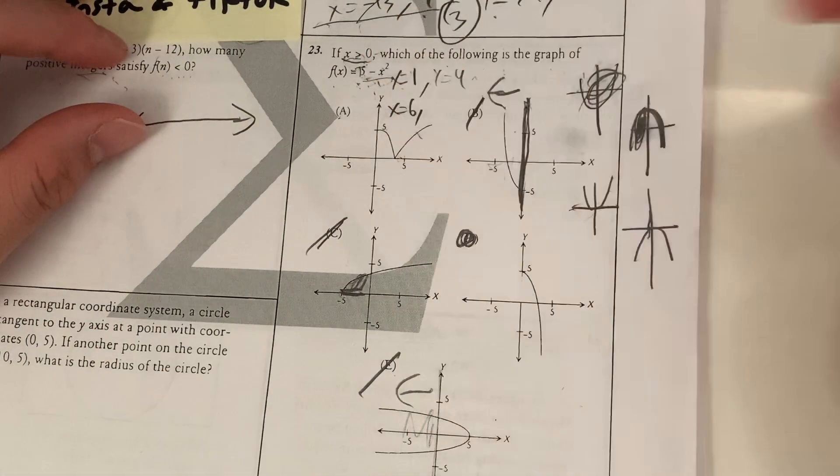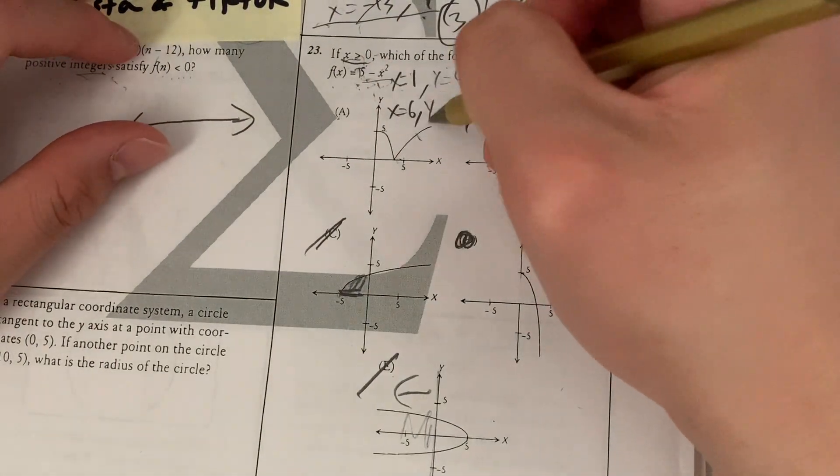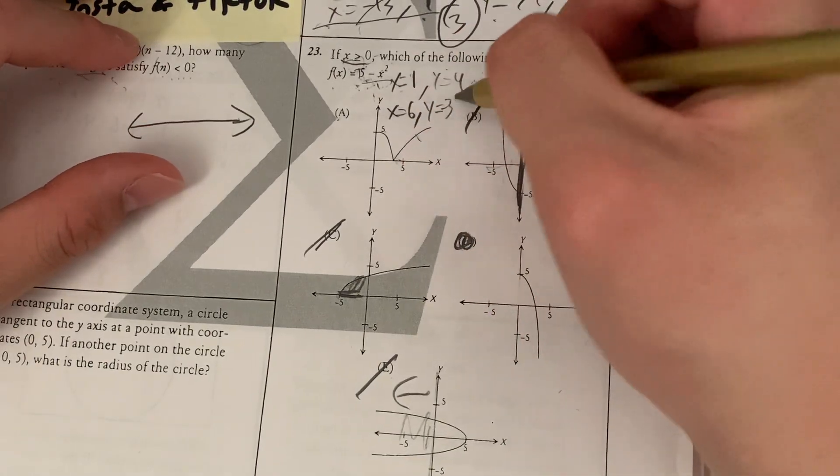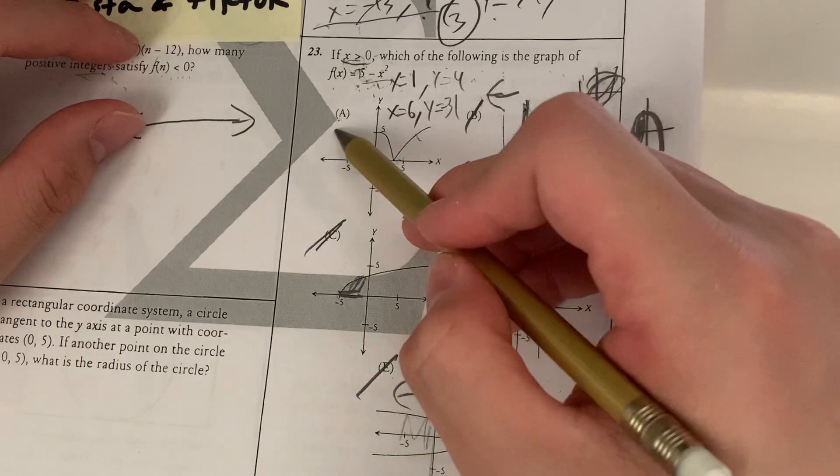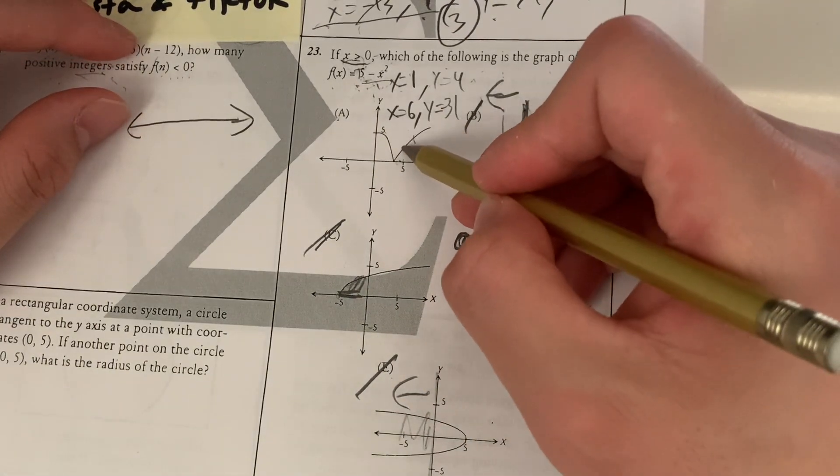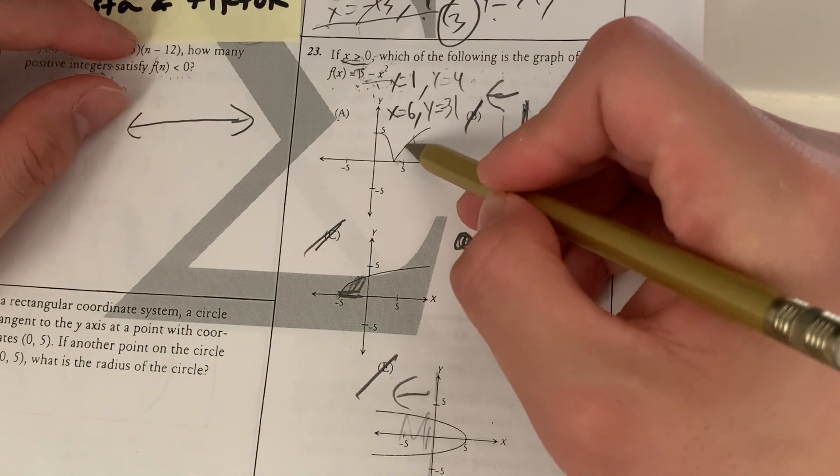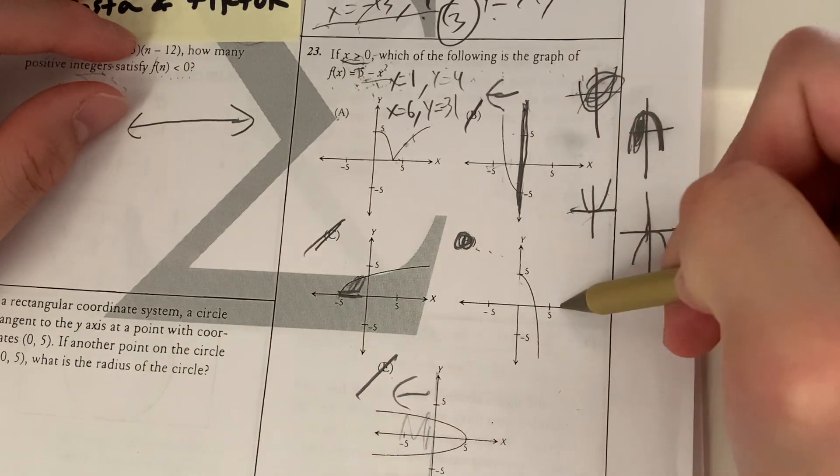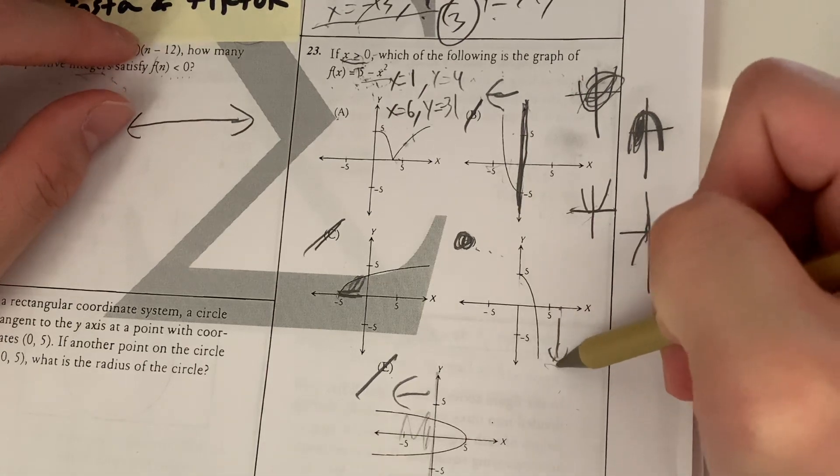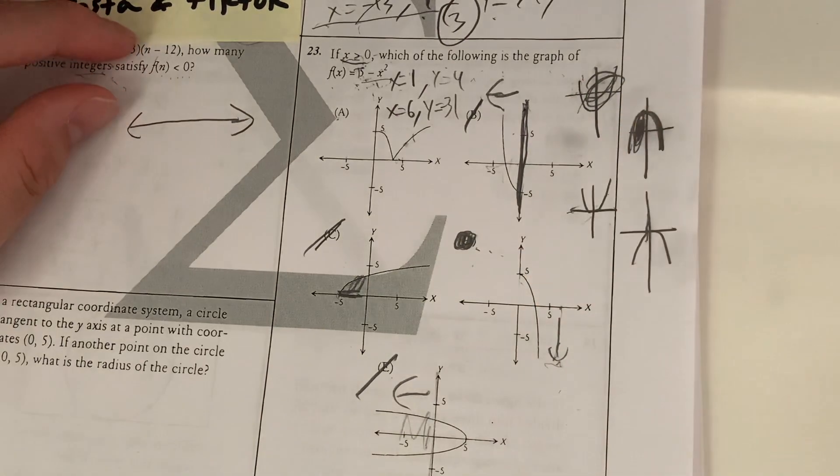Now another point I could choose is 6. So if x equals 6, what's the value of y? I get y equals, plug it in, 5 minus 6², which is negative 31. Now looking at these two graphs that are left, A and D, I see that when x equals 6, y equals some positive number. Whereas in D, when x equals 6, y equals some negative number down here. So it means D is going to be my answer.